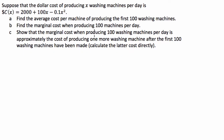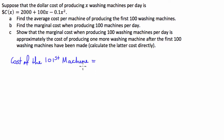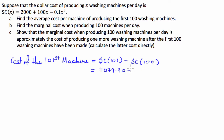Now onto part C, where we're asked to show that the marginal cost of producing 100 washing machines per day is approximately the cost of producing one more washing machine after the first 100 have been made. The hint says to calculate the latter cost directly. So basically, we need to find the cost of the 101st machine, which equals the cost function evaluated at 101 minus the cost function evaluated at 100. When we enter 101 into this function, I get $11,079.90. And from part A, we know the cost of producing 100 machines is $11,000.